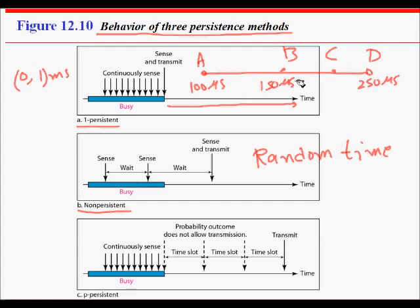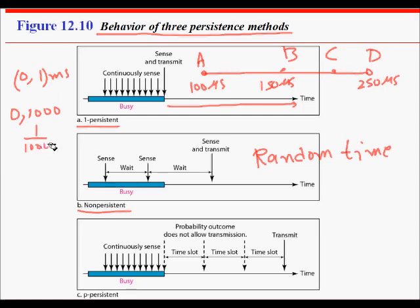For example, A waits 100 microseconds, B waits 150 microseconds, and D waits 250 microseconds. A starts sending at 100 microseconds; when B's 150 microseconds expire it senses the channel again and finds A is already transmitting, so B waits again. The probability that A and B choose the same time from 0 to 1000 values is only 1/1000. Non-persistent has fewer collisions, but there is also wasted idle time on the channel.